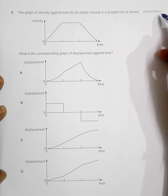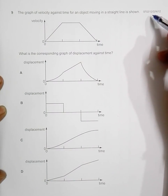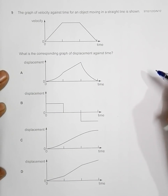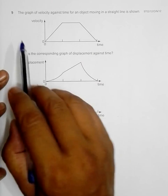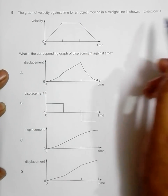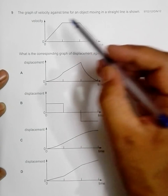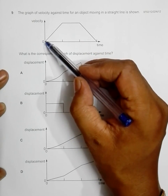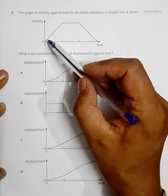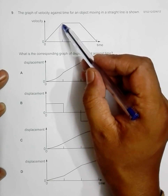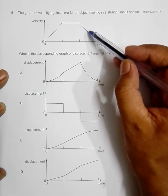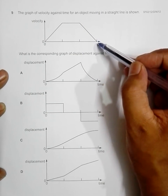This is question 9 from the 2012 October/November Paper 1, a question related to kinematics graphs. The graph of velocity against time for an object moving in a straight line is shown. The velocity of the body is zero in the beginning, meaning it is at rest. From then onwards, its velocity increases uniformly till a certain time, after which the velocity becomes constant, and then decreases uniformly to zero again.